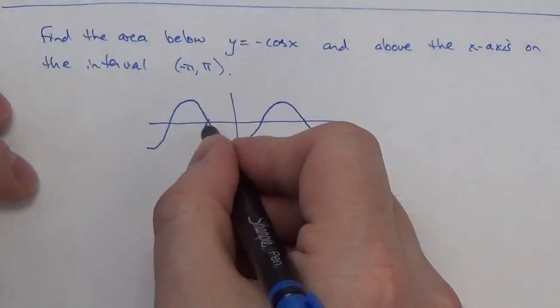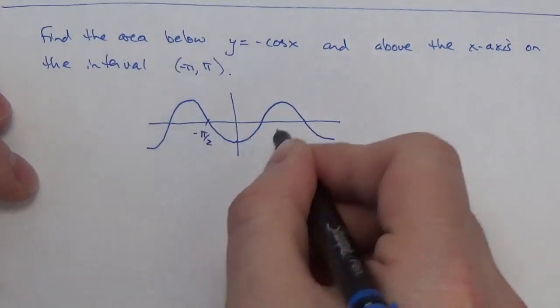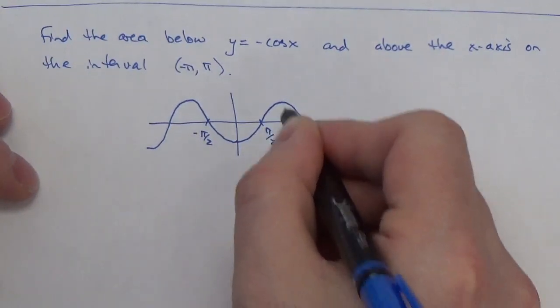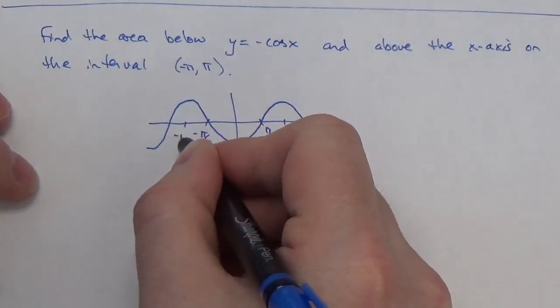So, it's going to hit its zero here at negative pi over 2, positive pi over 2. It's going to hit its maximum here at pi, and then back here at negative pi.